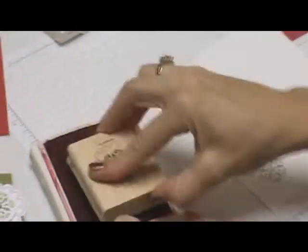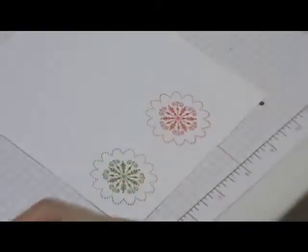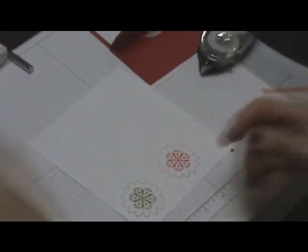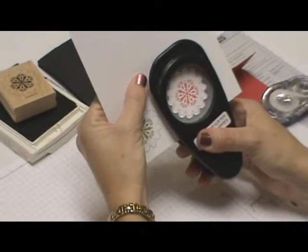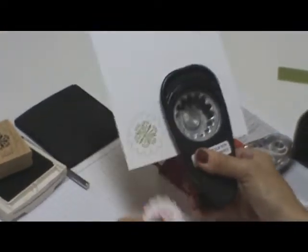And I'm going to stamp it again, but this time in real red. Now I'm going to punch out the real red with our scallop circle punch, just line that red up in there and punch that out. And then for this one, whoops, got the wrong one, let me grab the 1 1/4".